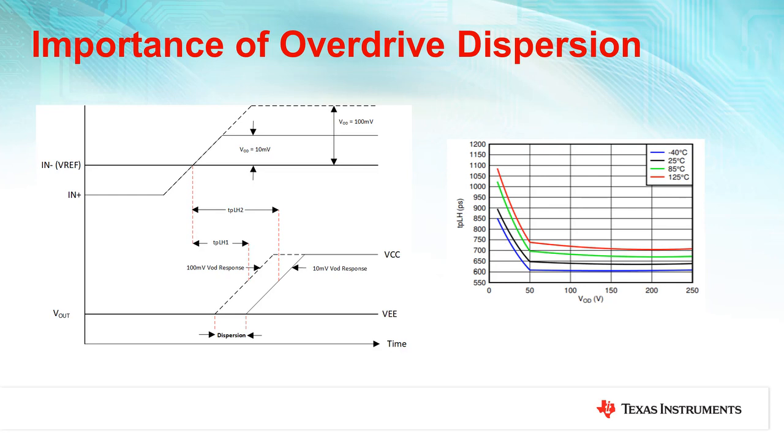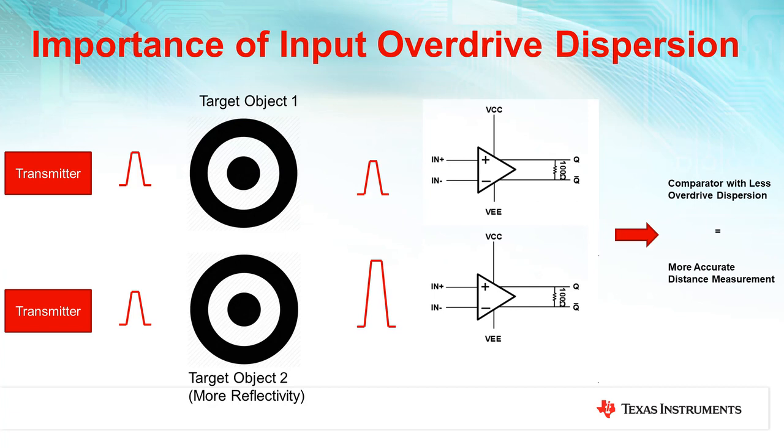Input overdrive dispersion is also tied to the rated distance the time of flight system can calculate. Selecting a comparator with small input overdrive dispersion will result in a system that can more accurately compute distances for a wide range of target objects. For example, an object at the same distance as another object may have better reflective properties.